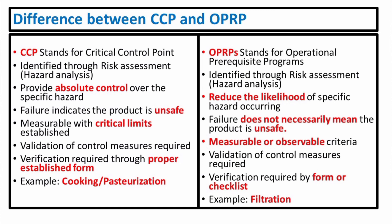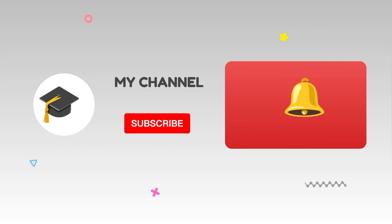Examples of CCP include cooking and pasteurization. An example of OPRP is filtration in a process. These are the key differences between CCP and OPRP. I hope you now understand CCP and OPRP — thank you very much for watching this video.